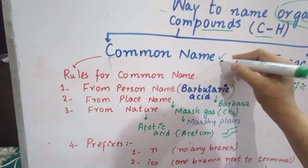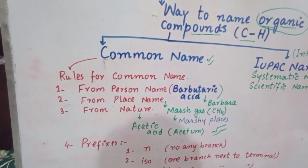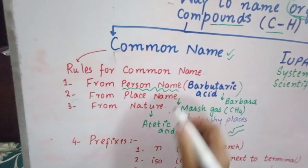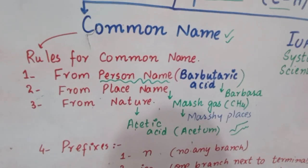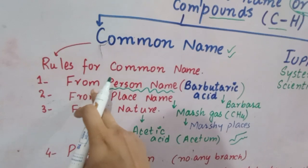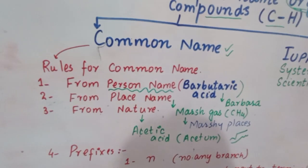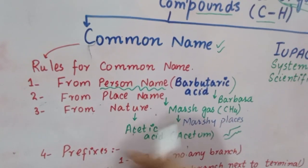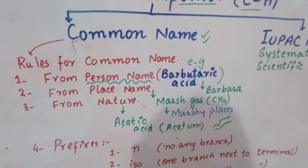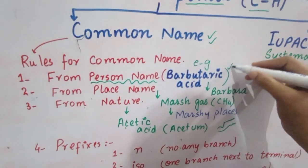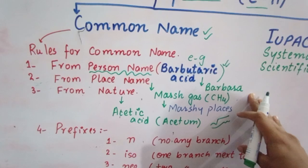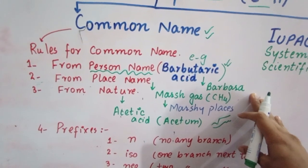Common name - we have rules. First rule about common name is naming according to the name of the person who discovered it. For example, there is an acid called barbutyric acid and the scientist who discovered it was named Barbara, and barbutyric acid is basically named due to Barbara. So it is a common name.